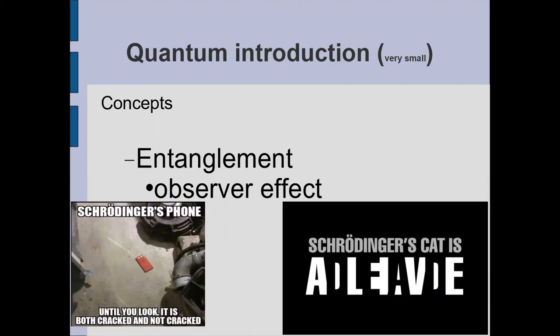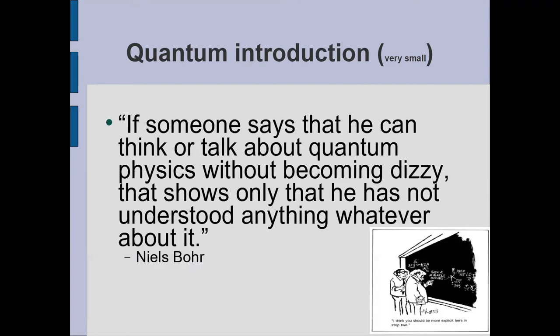We have all kinds of weird things about quantum mechanics and quantum computing. There's the observer effect. Schrödinger's cat is both alive and dead at the same time, and Schrödinger's phone — until you look — it's both cracked and not cracked at the same time. There's also an issue called entanglement, and we're going to touch on that slightly in terms of networking. The entanglement of multiple qubits is what gives us the opportunity to perform the same function on a bunch of qubits and find out which answer actually fits — with one operation.